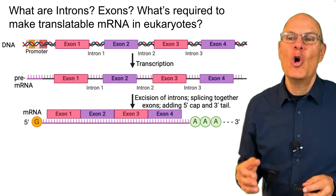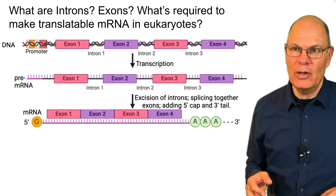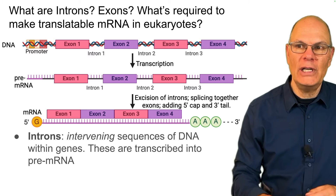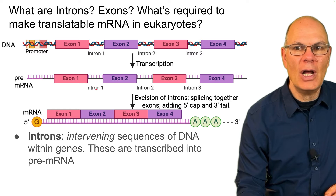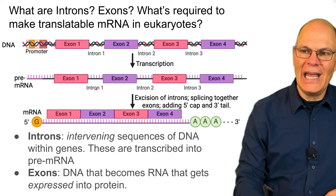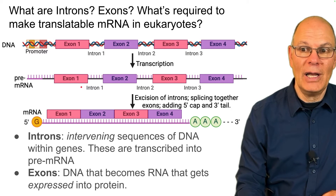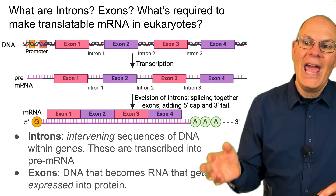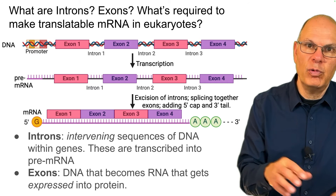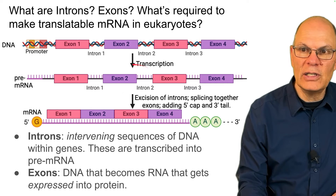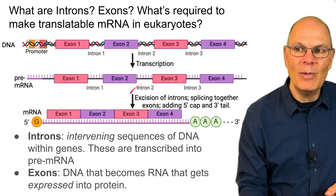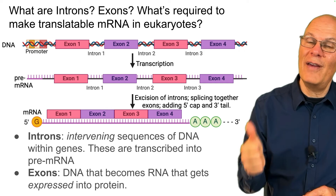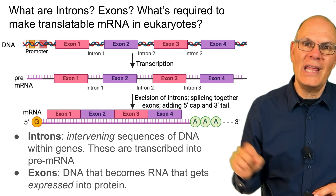What are introns and exons, and what's required to make translatable mRNA in eukaryotes? Introns are intervening sequences of DNA within genes — they are transcribed into pre-mRNA but do not code for protein. Exons are DNA sequences that become mRNA and ultimately get translated into protein. The process of transcription is relatively straightforward, but then all of these introns need to be cut out, and the mRNA needs modification so it can survive in the cytoplasm and be translated by a ribosome into protein.